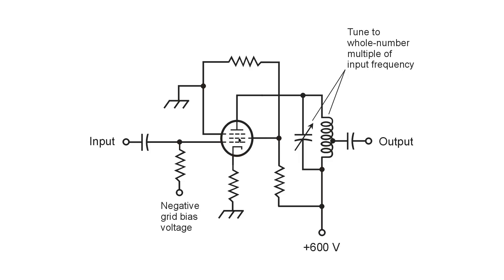The screen grid is biased typically as you would with a pentode tube. You'd have to look up the specifications of the particular tube to know exactly what this voltage would be. It would probably be something on the order of one-third of the positive plate voltage. In this case, that would be 200 volts.